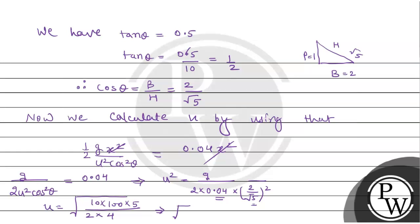So you will get root of 5000 upon, there is another 4 here, and this 4, so 4 into 4 is 16 times 2 is 32. So this becomes 32. Then when you solve, you will get u equals 12.48.